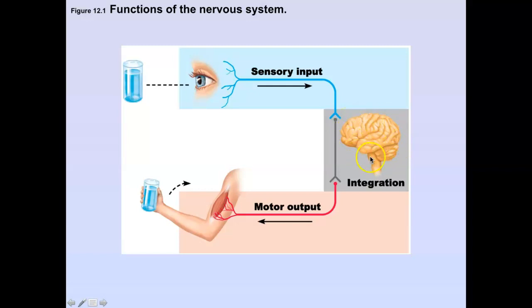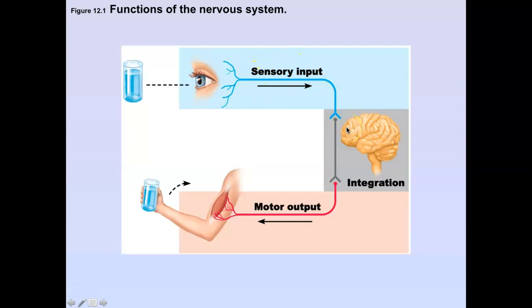The brain will integrate that information, and then any messages — action potentials or impulses — leaving the brain are going to be some kind of motor output. Motor commands can include signals going to skeletal muscle, or to smooth muscles, cardiac muscle, and glands — things we can't control. So: sensory is always going to go into the brain — it's sensory input. Motor is always going to leave the brain — it's motor output.